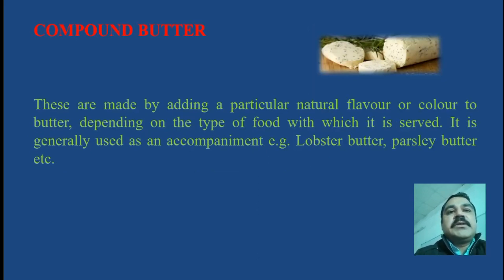Compound butter. These are made by adding a particular natural flavor or color to butter, depending on the type of food with which it is served. It is generally used as an accompaniment, for example lobster butter, parsley butter, etc.